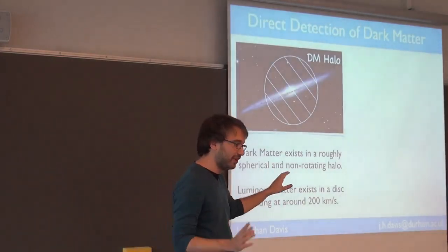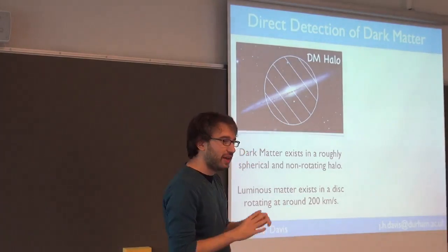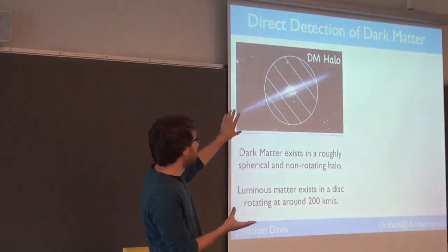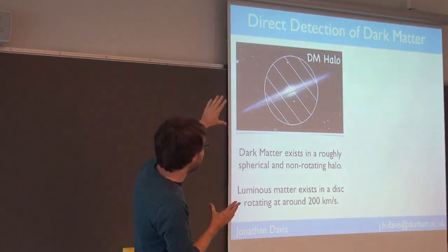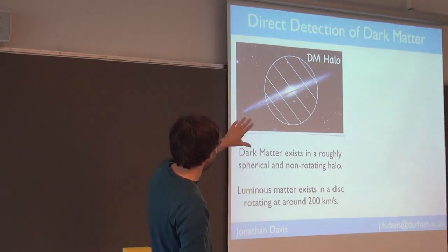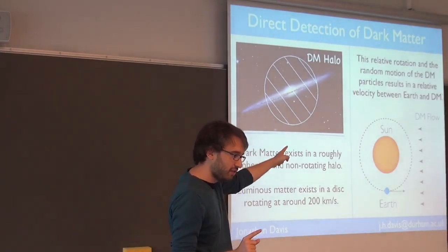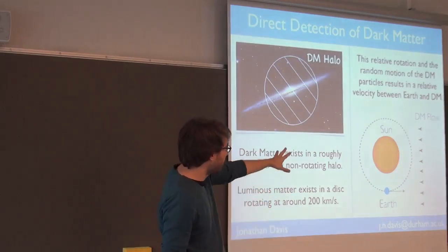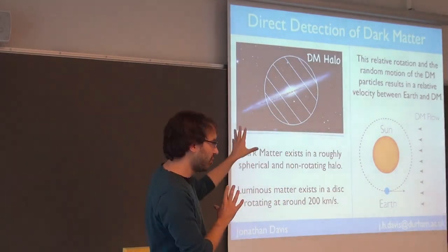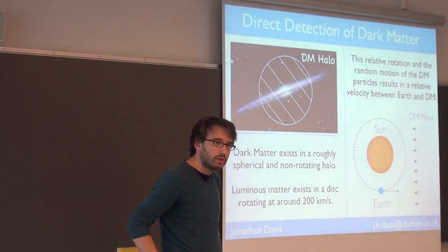So just a brief introduction to direct detection. Here is a sketch of the galaxy, with an oversimplified example of the dark matter halo overlaid. From rotation curve data and the like, you propose the existence of a spherical halo of dark matter — particles that surround the galactic disk and rotate very slowly or don't rotate at all. You can exploit the relative velocity between the Earth, which is inside this rotating disk, and the non-rotating halo to look for dark matter.